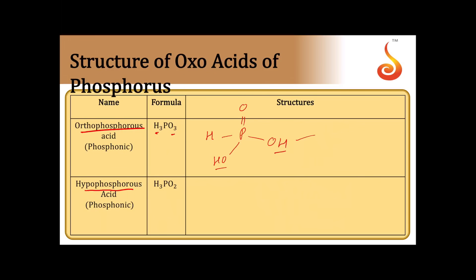Next, hypophosphorous acid (H3PO2): you can remember it by removing one oxygen from orthophosphorous acid. The structure has one P=O bond and one P-OH group, and the remaining two hydrogens are directly bonded to phosphorus. Therefore it has only one P-OH group, so its basicity is one and it forms only one type of salt. Hypophosphorous acid is a strong reducing agent because of its two P-H bonds.